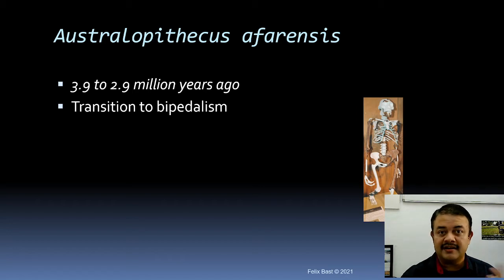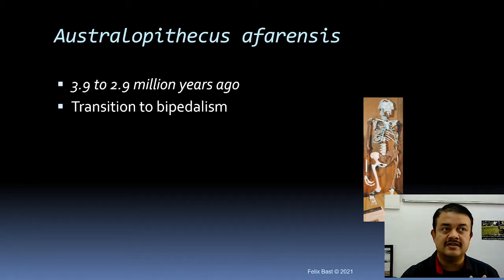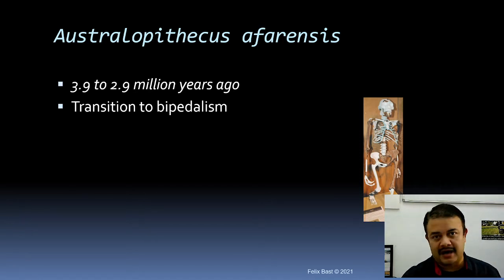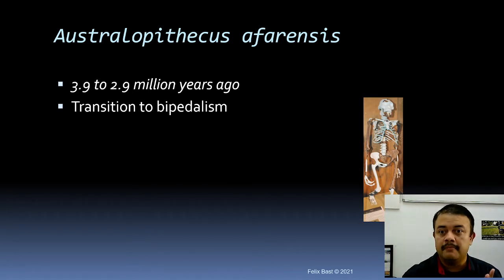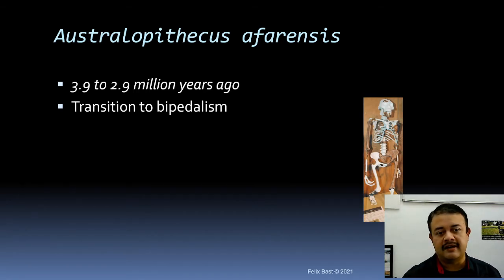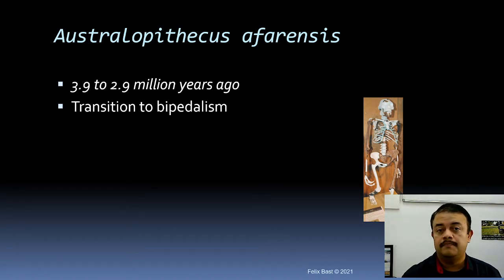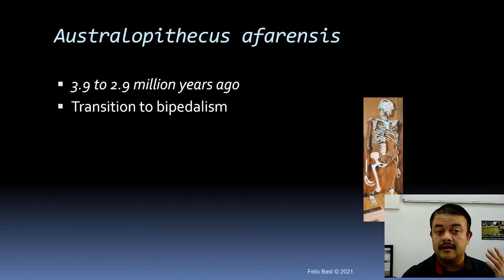Lucy is essentially a transition fossil to Homo. Homo is our genus, originating around 3 million years back, while Homo sapiens — our species — appeared around 300,000 years back. Lucy, a 3.2-million-year-old Australopithecus afarensis, represents a transition to bipedalism. Before this, the related hominids were quadrupedals and did not have an erect body shape. This shift to bipedalism was a big step.